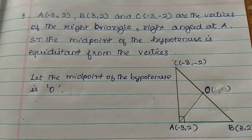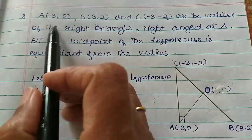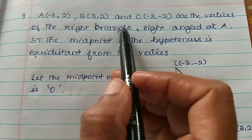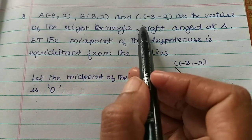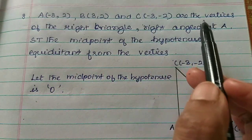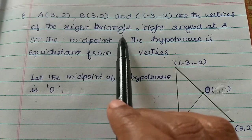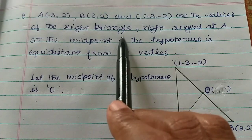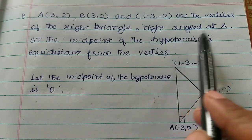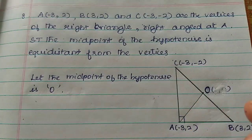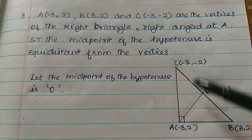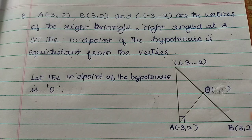Hi students, in this video we will see exercise 5.3. A(-3,2), B(3,2) and C(-3,-2) are the vertices of a right triangle, where A, B, C is a right angle triangle.